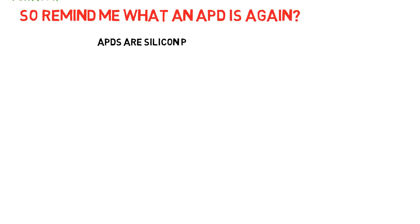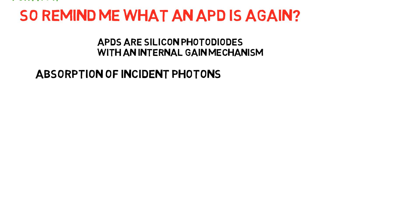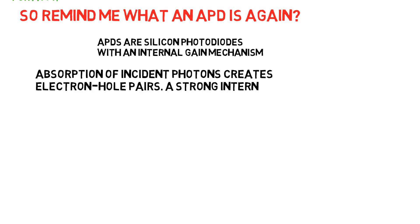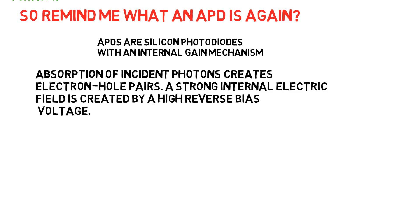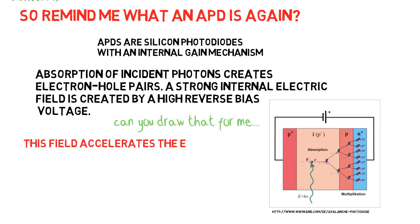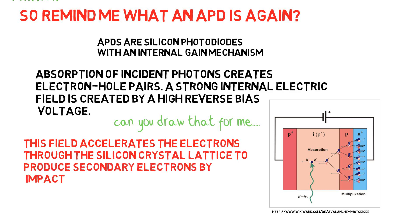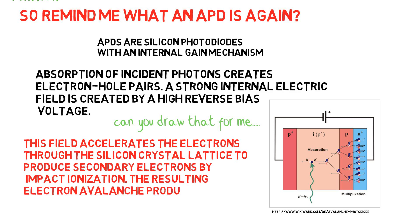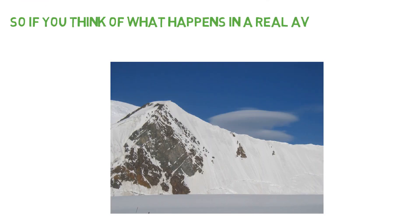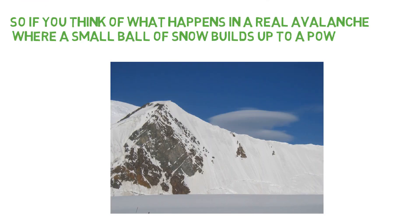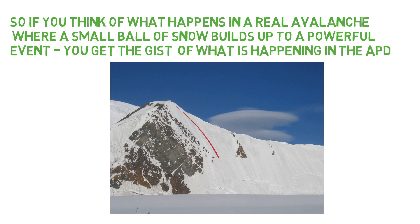APDs are silicon photodiodes with an internal gain mechanism. Absorption of incident photons creates electron-hole pairs. A strong internal electric field is then created by a high reverse bias voltage. This field accelerates the electrons through the silicon crystal lattice to produce secondary electrons by impact ionization, and the resulting electron avalanche produces a very high gain — similar to how a small ball of snow builds up into a powerful avalanche event.